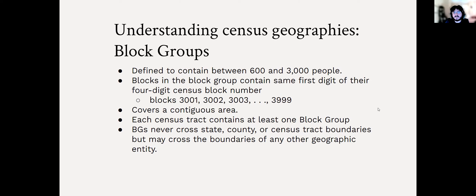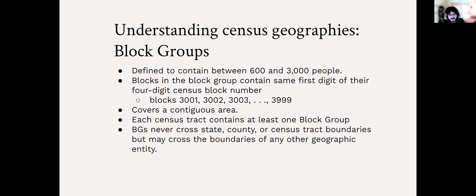Next I want to talk about block groups, which are the next step up from blocks. Block groups are made up of blocks and are defined to contain between 600 and 3,000 people, so they're not the same in population for each group. Blocks in a block group share the same first digit of their four-digit census block number — for example, blocks 3001 through 3999. They cover a continuous area, each census tract contains at least one block group, and block groups never cross state, county, or census tract boundaries.